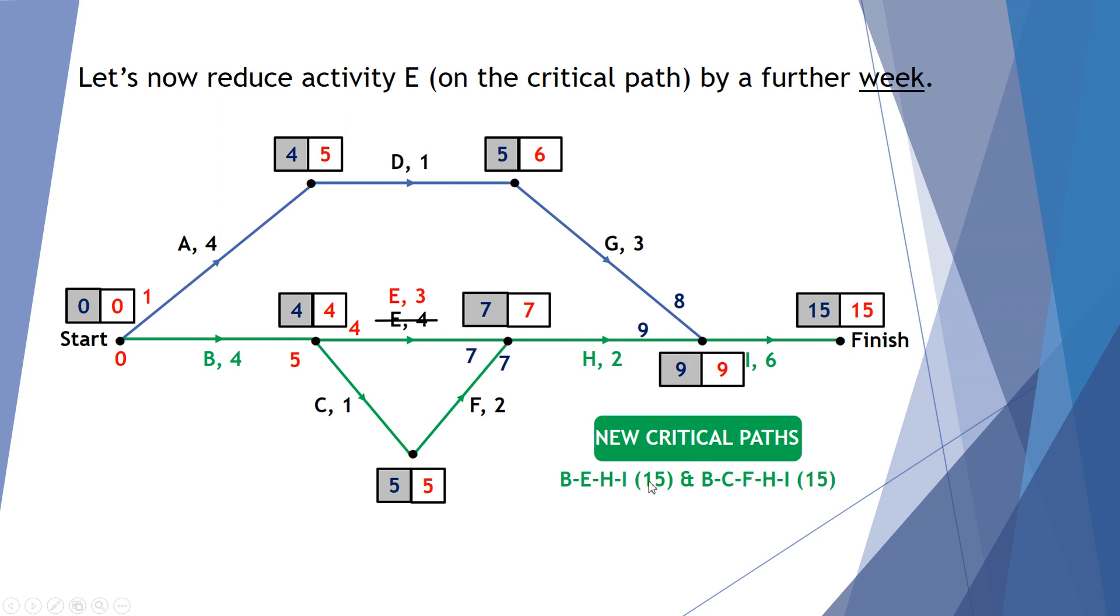B, E, H and I is one path with a completion time of 15 weeks. And B, C, F, H and I is the other at 15 weeks. Now we could have reduced this by 2, which would drop this down to 2. But that would mean this value here would become 6 and it would be no longer on the critical path. So it's not of any value to reduce E by 2 because it is no longer contributing to reducing the final end result.